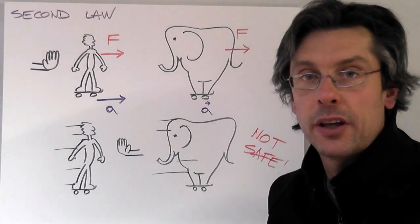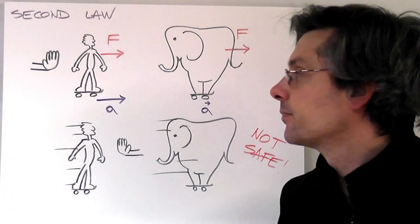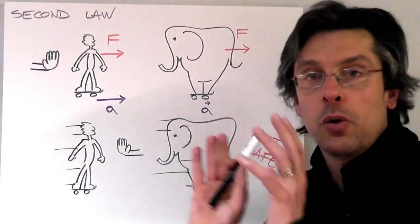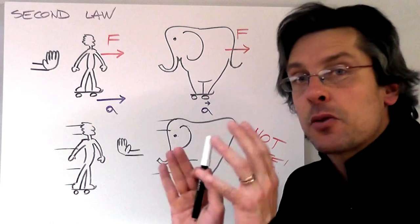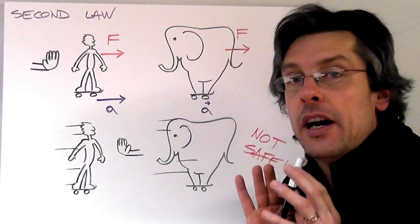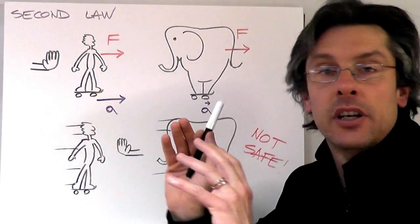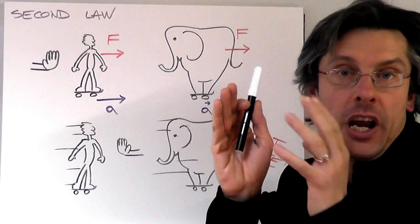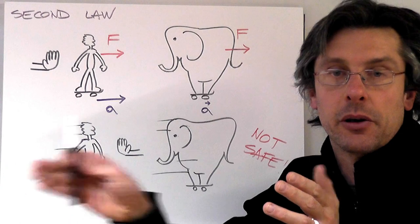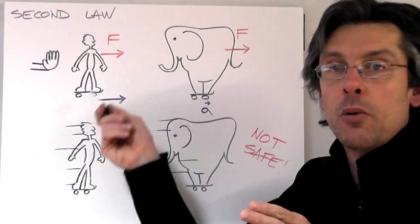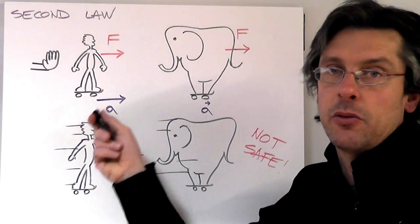Let's compare two objects with a very different mass. Let's imagine you have one of your friends on a skateboard and you want to push him. It is quite easy to make him start moving. So you apply a force and his speed will change from zero to non-zero. That means he will accelerate. So to a given force will correspond a given acceleration.